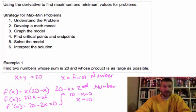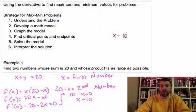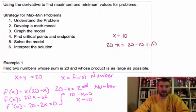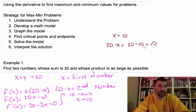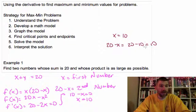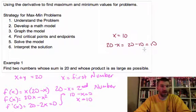So what does that mean? That means that if I take this number, x equals 10, and I check it with my other number, 20 minus x, that would be 20 minus 10. If I multiply these two guys together, I get 100. If I add them up, I get 20. And when I multiply them together, that is the largest possible product.